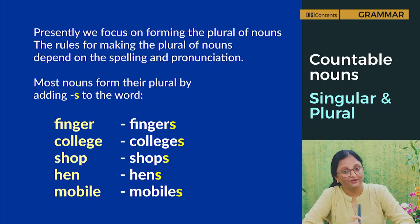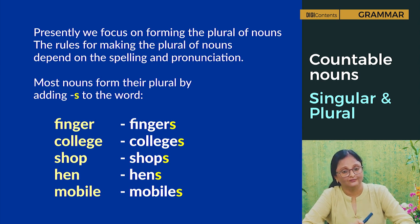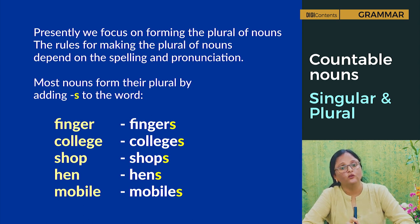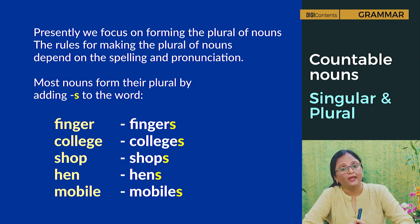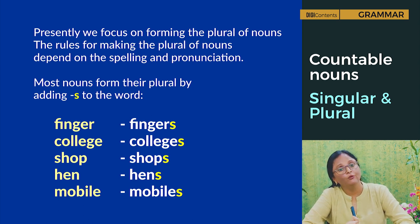We use singular verbs with singular nouns and plural verbs with plural nouns — this we will study in our next class. Presently, we focus on forming the plural of nouns. The rules for making the plural depend on spelling and pronunciation. Most nouns form their plural by adding -s: finger/fingers, college/colleges, shop/shops, hen/hens, mobile/mobiles.